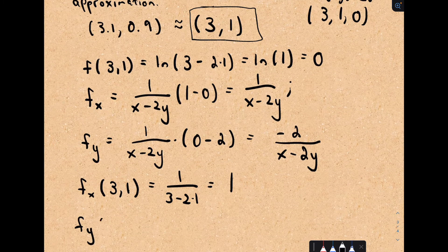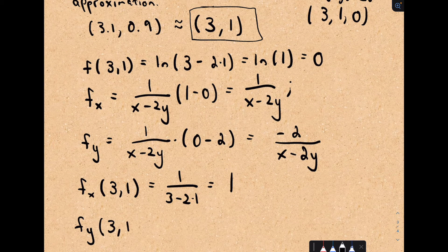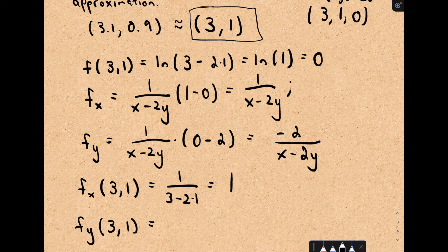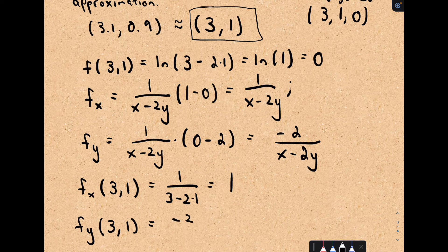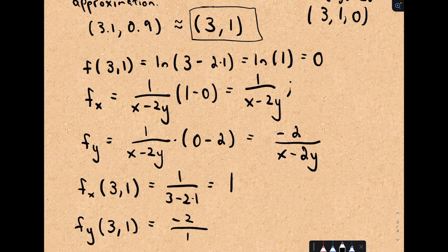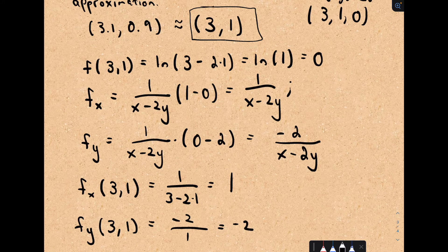And if I do the partial with respect to y at this point 3, 1, I'm going to get... So now I've got to use my other formula. In this case, we would get negative 2 in the numerator. In the denominator, we're still going to get 1. So we're going to get negative 2.